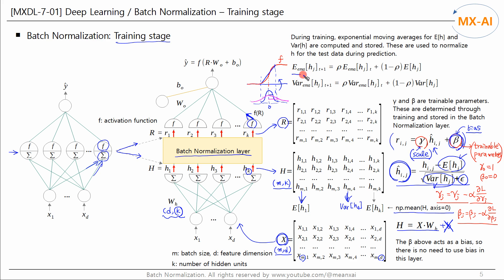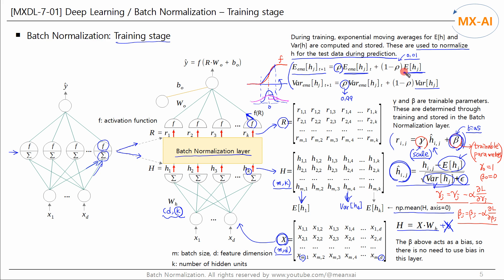During training, exponential moving averages for E and var are computed and stored. These are used to normalize H for test data during prediction. Rho is a hyperparameter — larger rho reflects more past E, and smaller rho reflects more recent E. For the Keras batch normalization layer, the default value of rho is 0.99, giving a weight of 0.99 to past E and 0.01 to recent E. If there is a second hidden layer, the same process is performed on that layer as well.